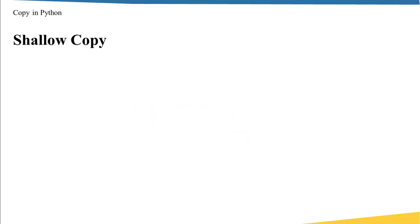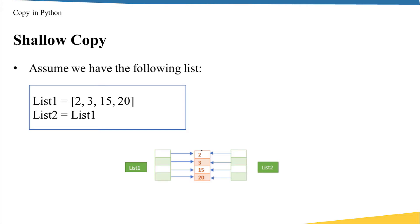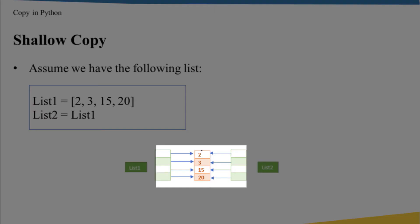First, let's start talking about shallow copy. To understand the idea better, I will start with an example. Assume we have the following list: list1 equal to 2, 3, 15, 20, and list2 equal to list1. In this case, you might think that list2 is a standalone variable having a value equal to the values in list1. However, Python will not create a standalone variable — it will create a new reference. As you see here, list2 and list1 point to the same values in the memory.